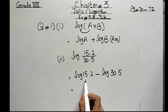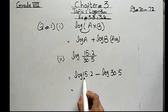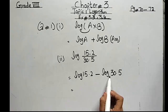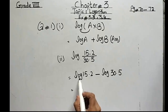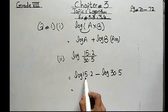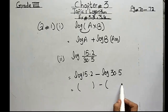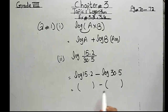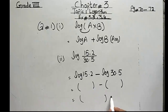You also know how to find the log of these numbers. You can find the log using a calculator: press the log key, write 15.2, then press equal to get log(15.2). Then find log(30.5), and in the second step subtract this number from the first to get the final answer.